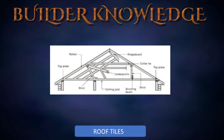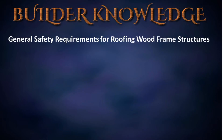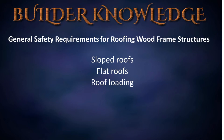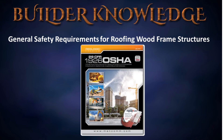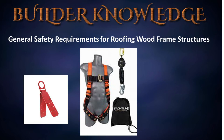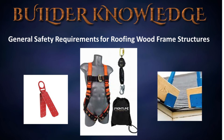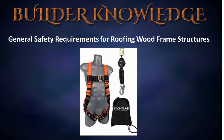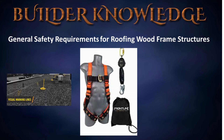Before we go any further, let's cover some general safety requirements for roofing wood frame structures. We need to research job-specific safety equipment and procedures in 29 CFR 1926 to accommodate project requirements. For sloped roofs, you may require full-body harnesses with self-retracting lanyards (SRL), roof brackets, or anchors designed for 5,000 pounds per person, or slide guards. On a flat roof, you may require a full-body harness, restraining system, an SRL, or a warning line system 6 to 10 feet from the leading edge, or temporary guardrails. Personnel working inside the warning line system do not require fall protection.